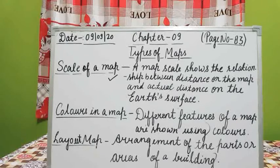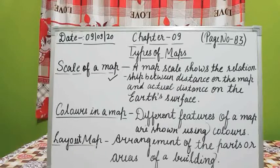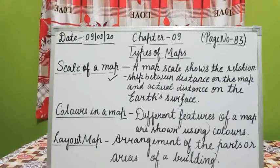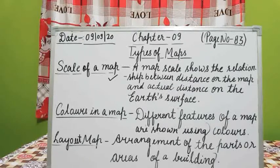There are two types of map scale. The first one is verbal scale. Verbal means what is said orally — a statement is used as the map scale. For example, '1 cm represents 100 km.' That is known as verbal scale.